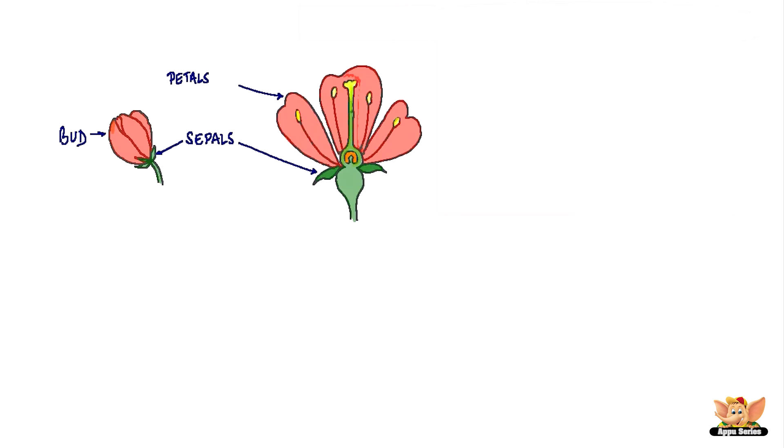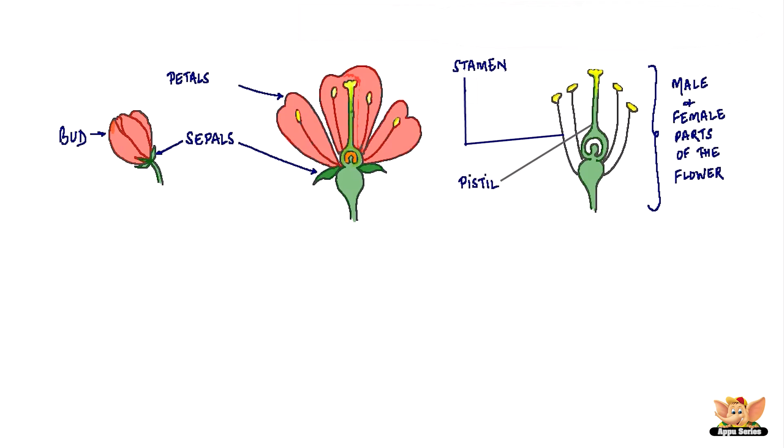Remove the petals and sepals and you will see different parts inside. These are male and female parts that help make seeds. The male part of the flower is called the stamen. The female part of the flower is called the pistil.